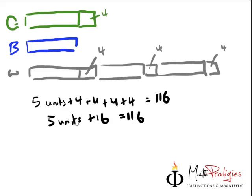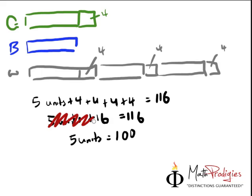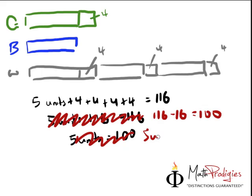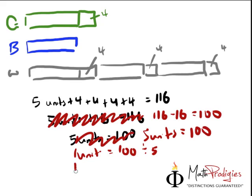So what must you do now? In order to get rid of the sixteen, you need to minus it off from both sides — from the left and from the right. So you get five units equals one hundred. What I'm writing is more like algebra. So: 116 minus 16 equals 100. Five units equals 100. Therefore, one unit equals 100 divided by 5, and hence one unit equals twenty.